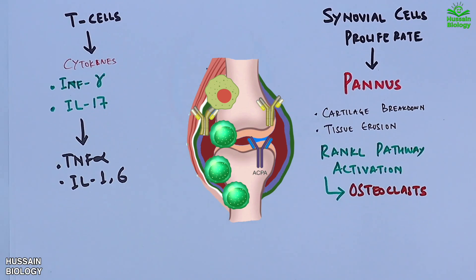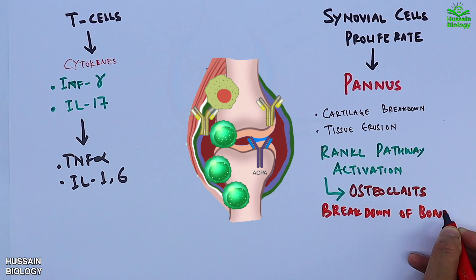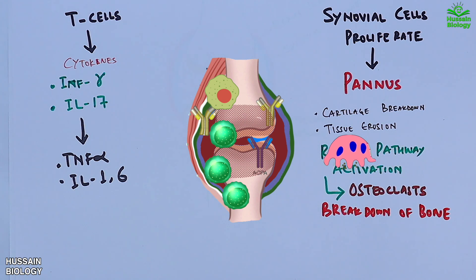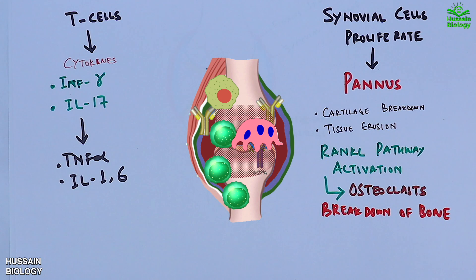This is followed by cartilage breakdown and tissue erosion, as shown in the diagram. Signaling pathways are also abnormally activated, including the RANKL pathway, which produces osteoclasts. These osteoclasts in the synovium drive breakdown of bone. Overall, the synovial joint has been degraded by these immune events and conditions.